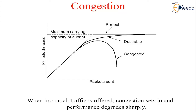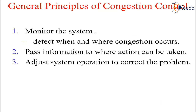The reason Congestion Control and Flow Control are often confused is that some congestion control algorithms operate by sending messages back to the various sources telling them to slow down when the network gets into trouble. Thus, a host can get a slowdown message either because the receiver cannot handle the load or because the network cannot handle it. Then we will see general principles of Congestion Control. The congestion control approach leads to dividing all solutions into two groups: open loop and closed loop.